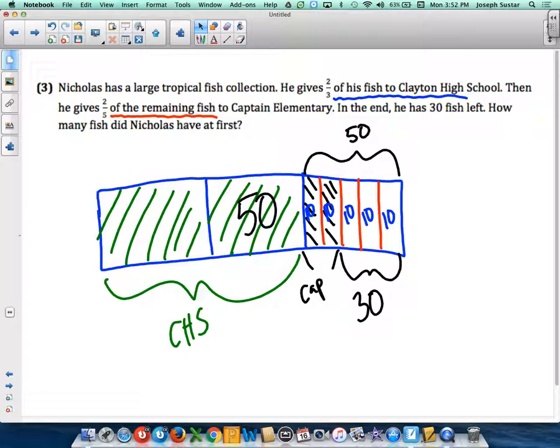then this piece is also 50 and this piece is also 50. To find out how many fish he had at first,